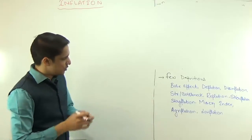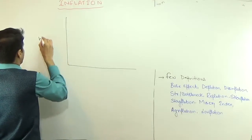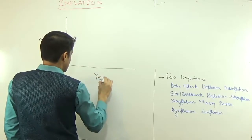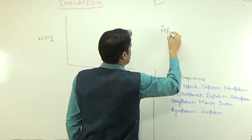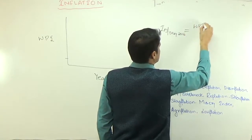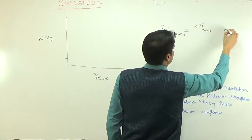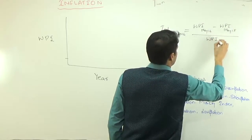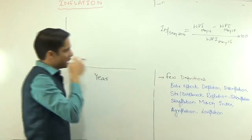The same thing happens in case of inflation. Suppose this is the value of WPI — 100, 150, whatever. And this is the year. So we discussed how we measure inflation. Inflation in May 2016 equals WPI in May 2016 minus WPI in May 2015, divided by WPI in May 2015, multiplied by 100. So this is how we measure it.